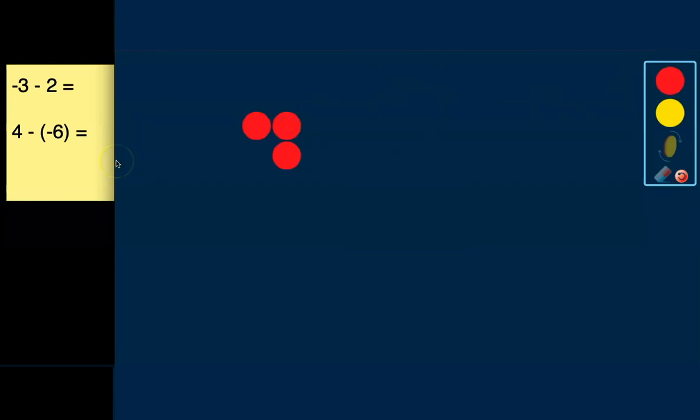The next thing the problem is asking us to do is subtract positive 2. But when you look here, we don't have any positive counters to represent positive 2. So we're going to use our zero pairs to help us be able to do that. So to get 2 over here for the positive, we're going to use our zero pairs. So we have a negative 1 and a positive 1. There's a zero pair.